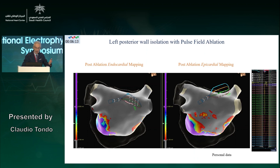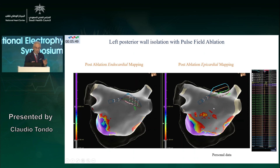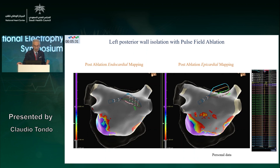These two mapping pictures are very illustrative. On the left, the post-ablation endocardial mapping shows complete isolation of the four pulmonary veins and the left posterior wall — no electrical activity at all. On the right, the post-ablation epicardial mapping was obtained through a concomitant endo- and epicardial mapping for investigational purposes, showing almost the same result as the endocardial mapping, with complete disappearance of atrial activity even at epicardial sites.